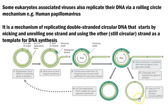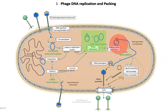This single-stranded DNA is further acted upon by DNA polymerase and RNA polymerase enzymes to form a double-stranded DNA molecule. Look at this image — it reveals how the lambda phage DNA is replicated and then packed for the further course of infection.